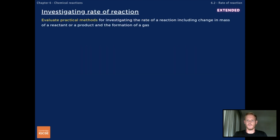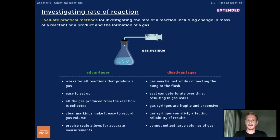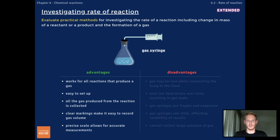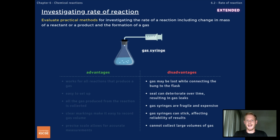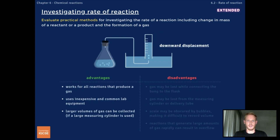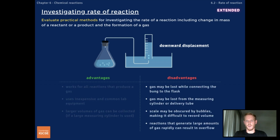Finally, you need to evaluate practical methods for investigating the rate of a reaction. The first method is gas collection using a gas syringe. Advantages include: it works for all reactions that produce a gas, it's quick and easy to set up, all the gas produced is collected due to the gas-tight seal, and the syringe has a precise scale allowing for accurate measurements. Disadvantages include: some gas may be lost while connecting the bung to the flask, gas syringes are fragile, relatively expensive and prone to sticking, and they have a limited capacity, making them unsuitable for reactions that produce large volumes of gas. Advantages of gas collection using a measuring cylinder include: it works for all reactions that produce a gas and uses inexpensive common laboratory equipment. However, gas may be lost while connecting the bung to the flask, improper handling can result in gas leaks, and the scale may be obscured by gas bubbles, making it difficult to record volume.